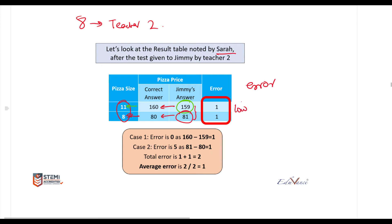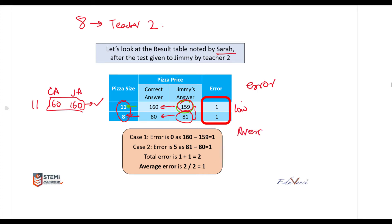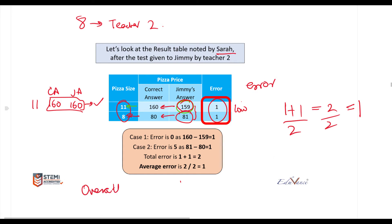In this case Jimmy got both answers wrong, but the error is still low. In the previous case for 11 inches the correct answer was 160 and Jimmy's answer was 160 — that was correct — whereas here he got 159, so it's technically not the same number. But if you look at the average error, it equals 2 divided by 2, which is 1. So his overall learning is better.